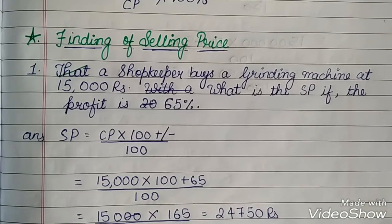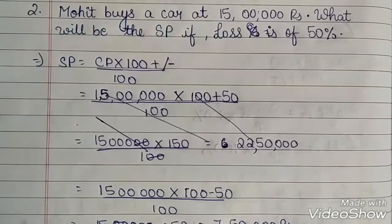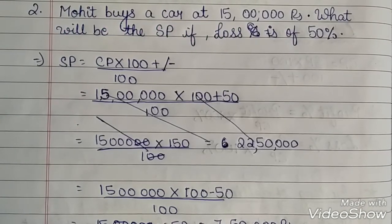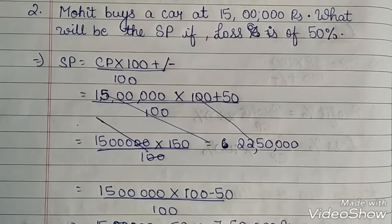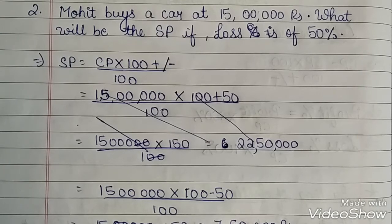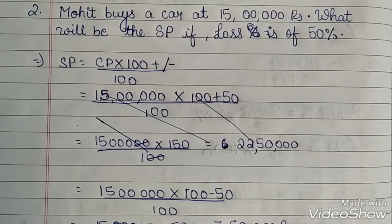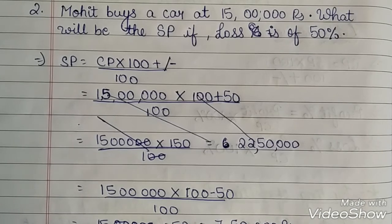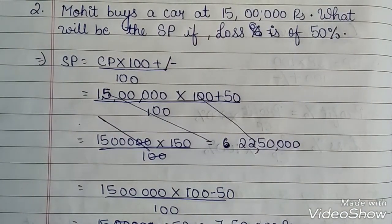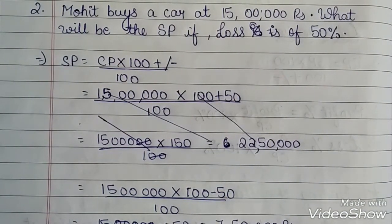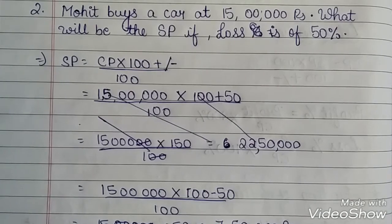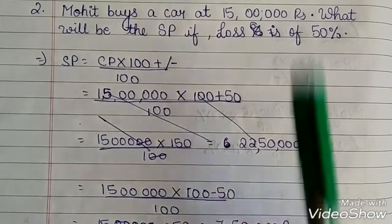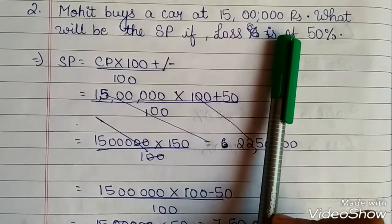Let's take the second example of loss percent. The second example is Mohit buys a car at 15,000 rupees. What will be the selling price if loss is of 50%? It means that Mohit buys a car at 15,000 rupees and sells with a loss of 50%.